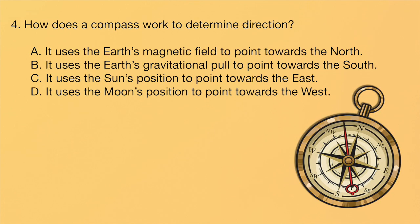Finally, question four. How does a compass work to determine direction? A, it uses the Earth's magnetic field to point towards the north. B, it uses the Earth's gravitational pull to point towards the south. C, it uses the sun's position to point towards the east. Or D, it uses the moon's position to point towards the west.